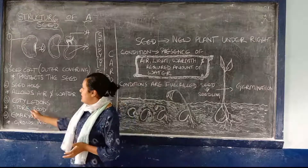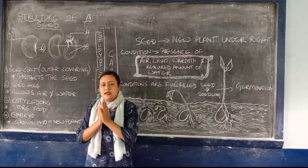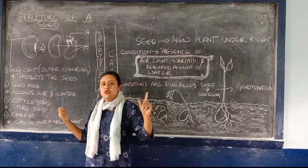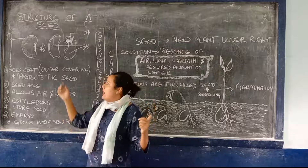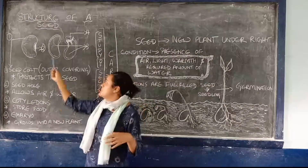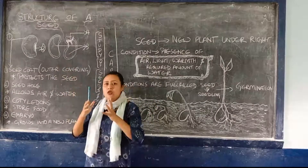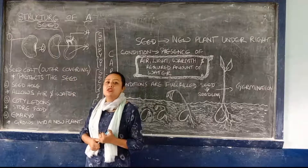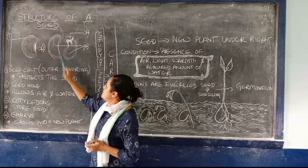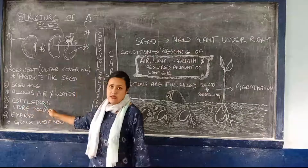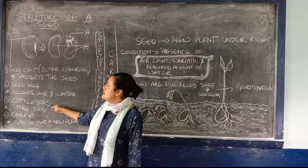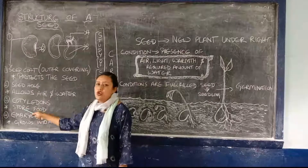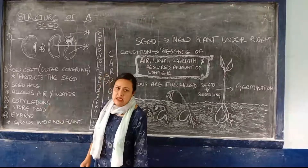Then, when you break a seed into two halves — some seeds cannot be broken, those are known as monocots. And seeds that have two cotyledons can be divided into equal halves. These halves are known as cotyledons, and their function is to store food for the seed.